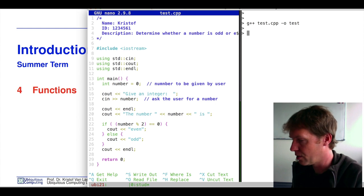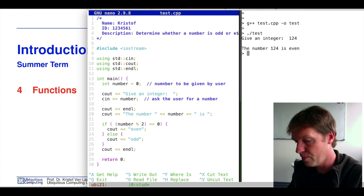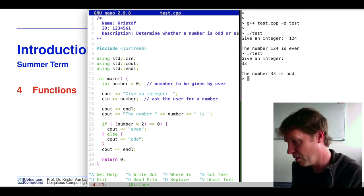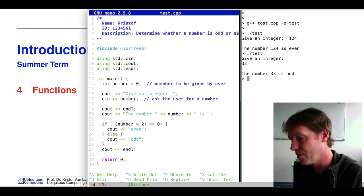So let's compile it to test and then execute test. We have to give an integer, for instance 24, and this is indeed even. If we give it 33 for instance, then it is odd.